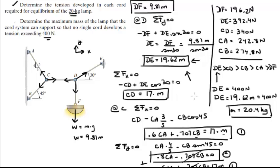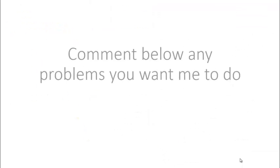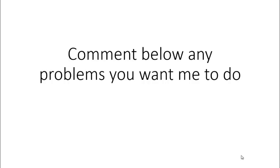The reason I like to do problems this way is that if somebody asks further questions about the system, or you need more information, you can come back and find answers in seconds. Final answer: the maximum mass is 20.4 kg, and the tensions in each cable are as calculated. Please comment below if you want me to do any problems and I'll be happy to help. Thank you.